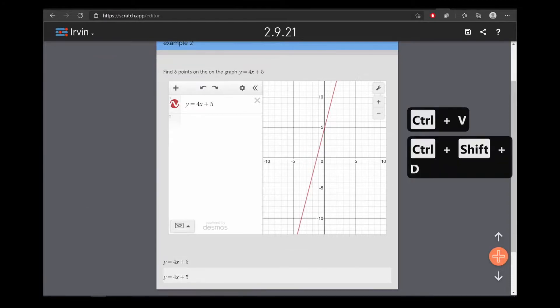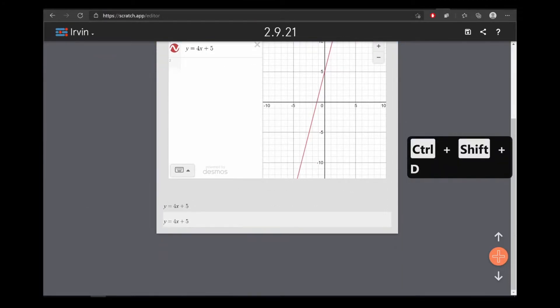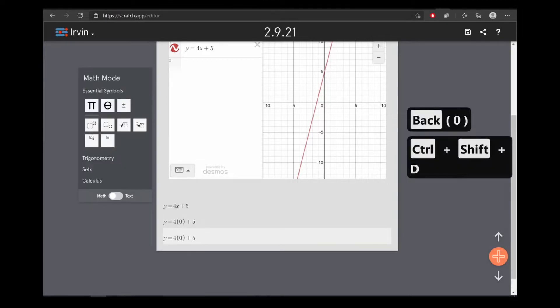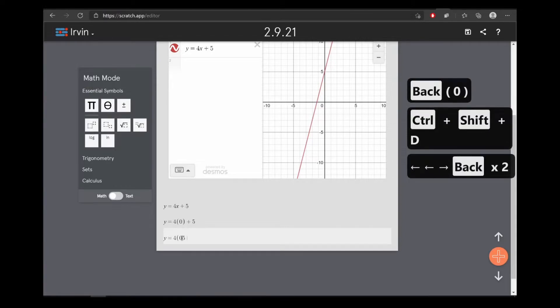Ctrl-Shift-Duplicate, and let's do 0. 0 for x. Results in y equaling 5.